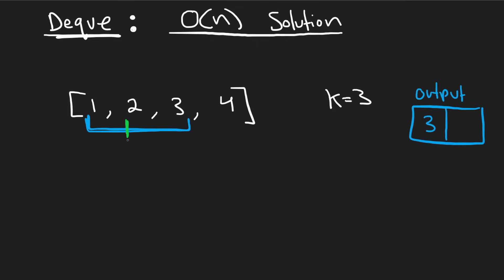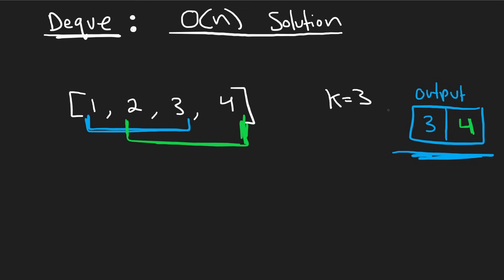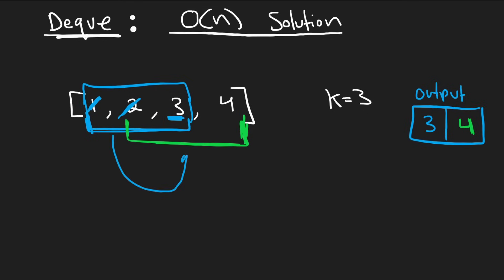Now we shift our window to the next position. I'm going to repeat that process the brute force way: check 2, check 3 — 3 is greater — check 4 — 4 is the greatest — so we add 4 to our output. But do you see the repeated work? In our first window we saw 1, 2, 3 and we know 3 is greater, so we can basically eliminate 1 and 2. When our window is at the next position, 1 is no longer part of our window. And since 3 is greater than 2 anyway, why would we ever need to look at the 2 again? It will never be the maximum.